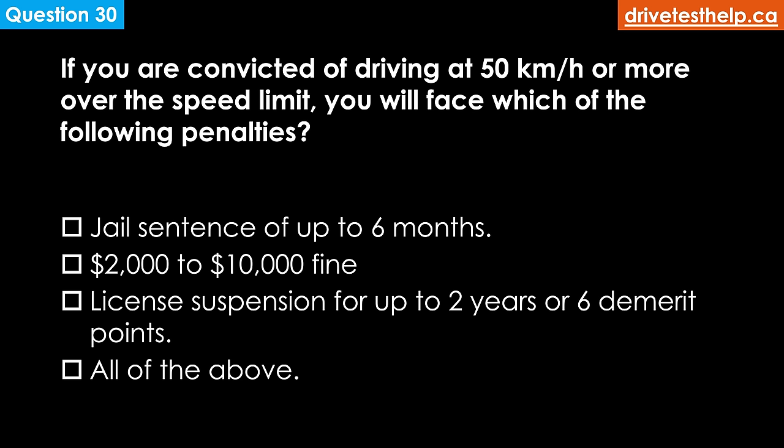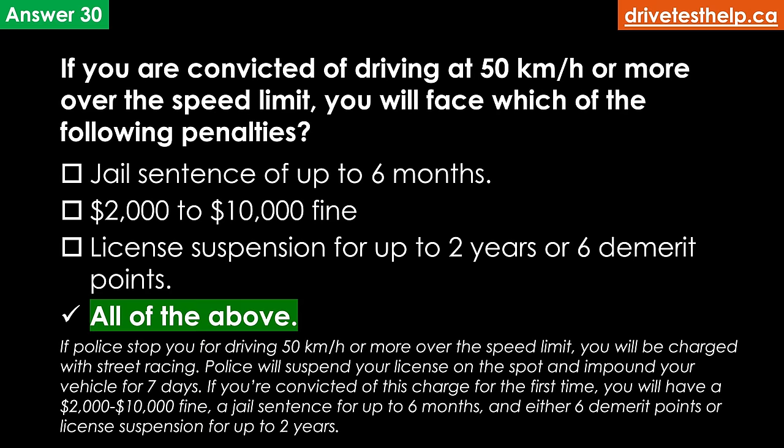If you are convicted of driving at 50 km/h or more over the speed limit, you will face which penalties? Options: jail sentence of up to six months; $2,000 to $10,000 fine; license suspension for up to two years or six demerit points; all of the above. If police stop you for driving 50 km/h or more over the limit, you will be charged with street racing. Police will suspend your license on the spot and impound your vehicle for seven days. If convicted for the first time, you face a $2,000 to $10,000 fine, up to six months in jail, and either six demerit points or license suspension for up to two years.